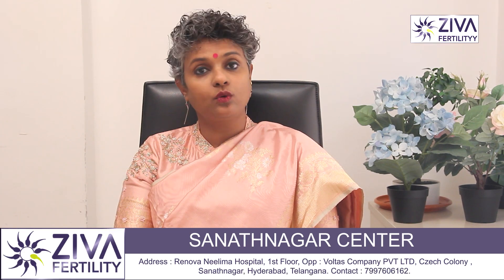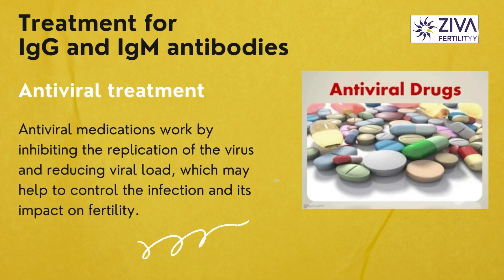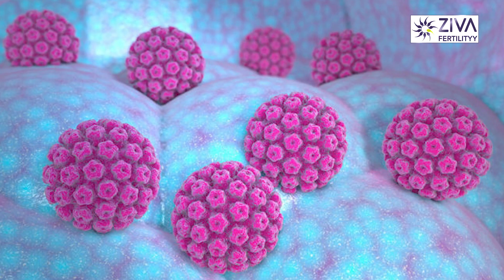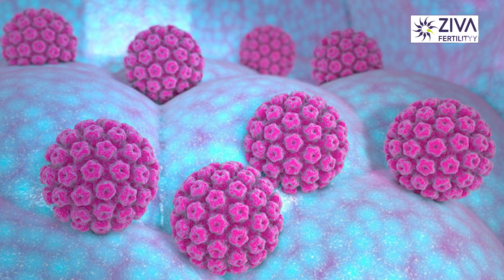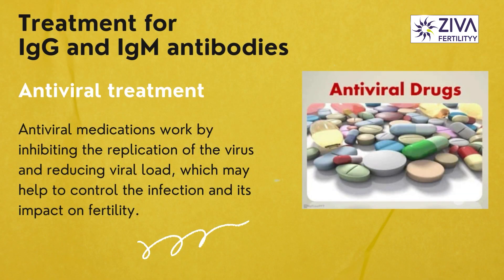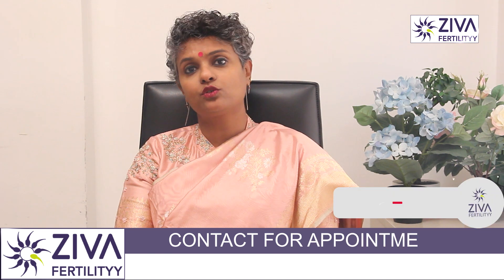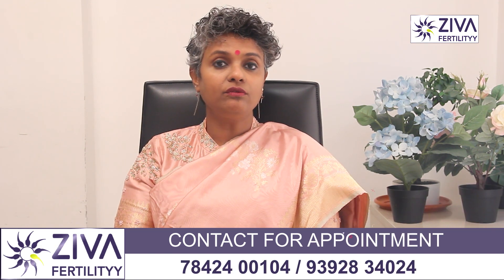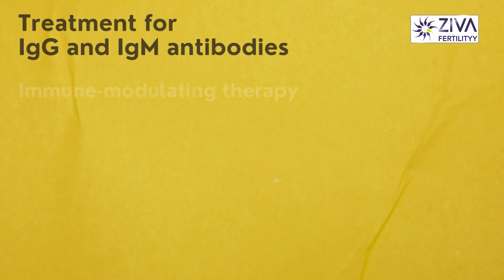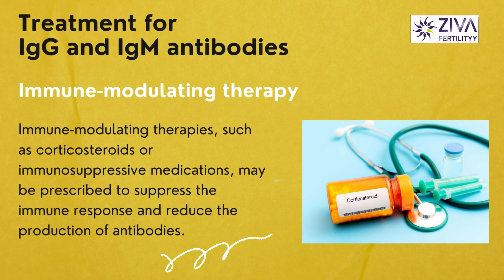Antiviral treatment: in the case of viral infections such as herpes or HPV (Human Papilloma Virus), antiviral medications may be prescribed to manage the viral infection. Antiviral medications work by inhibiting the replication of the virus and reducing the viral load, which may help to control the infection and its impact on fertility.